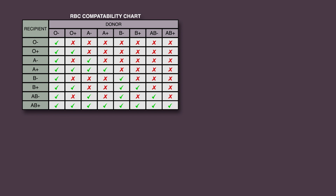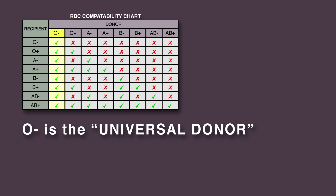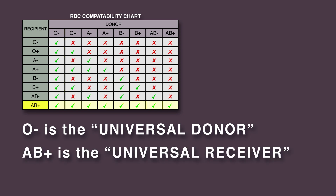Now let's apply what we've learned to fill out this red blood cell compatibility table. O negative is the universal donor. Since there are no A, B, or D antigens, O negative can donate blood to anyone without triggering an immune response from A, B, or anti-D antibodies. AB positive is the universal receiver, since there are no antibodies that will trigger an immune response to A, B, or D antigens.